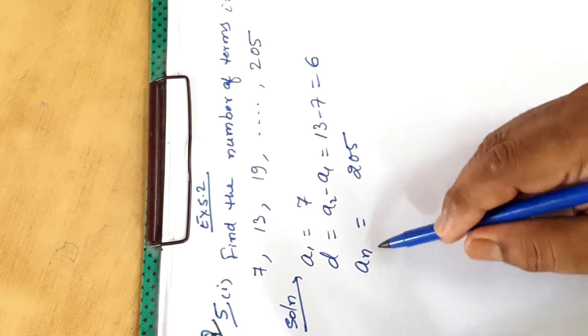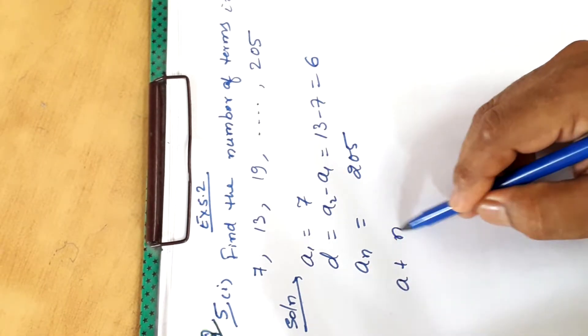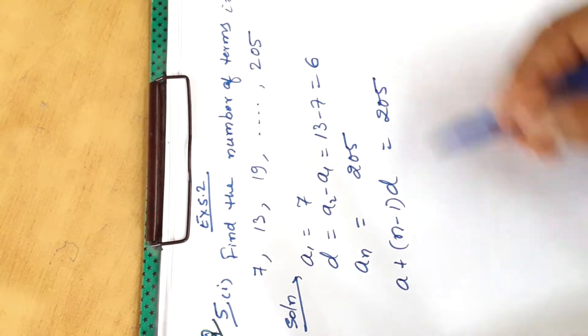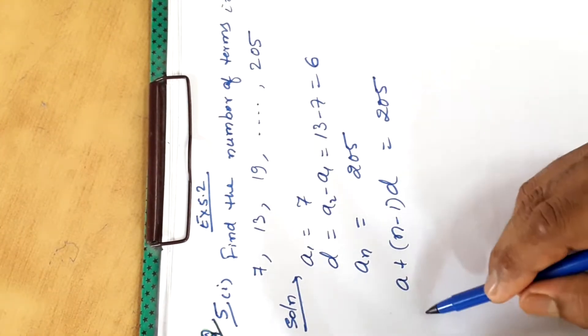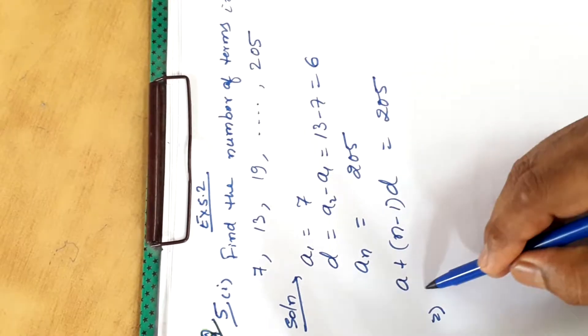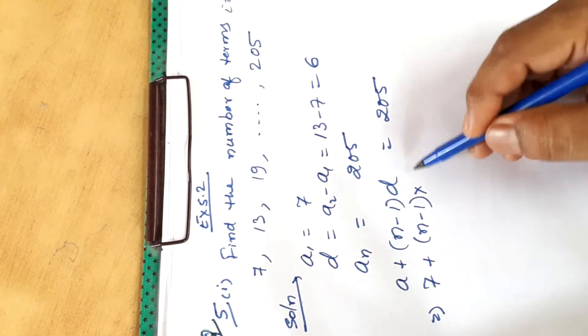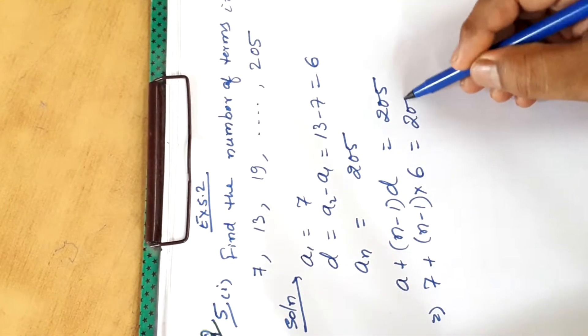First we will write the formula A plus N minus 1 times D equals 205. In place of A we will write 7. N minus 1, in place of D we will write 6. Now we will solve it.